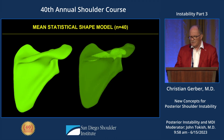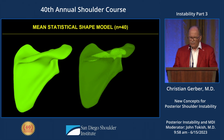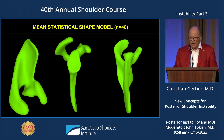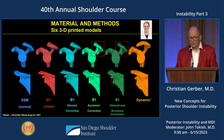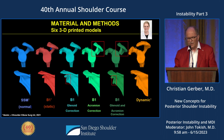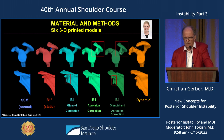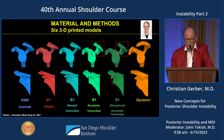This is a mean statistical shape model created from 40 normal shoulders, three-dimensionally. When we have instability, the green and pink one is a static posterior instability. That static instability is first corrected only at the glenoid side, then the acromion is corrected, and then both things are corrected.